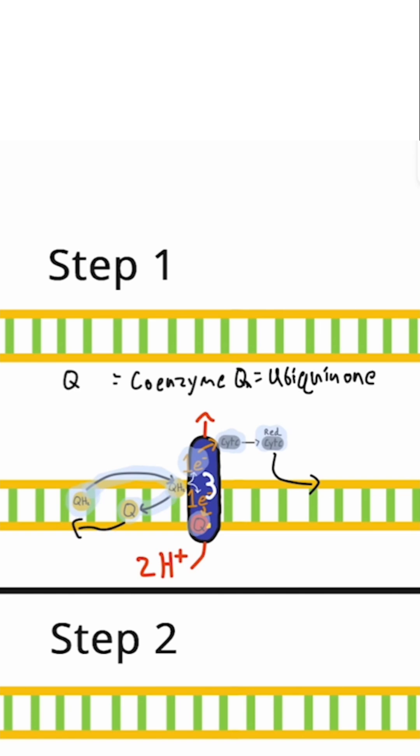Now it will go back to either complex 1 or 2 to get reduced again. During this first step, there are two protons that are pumped from the matrix into the inner membrane space. That's all there is for step 1.